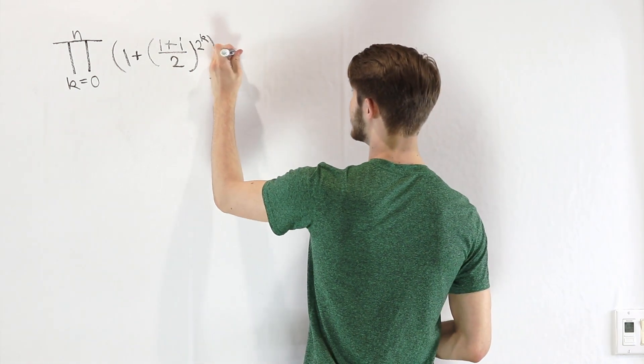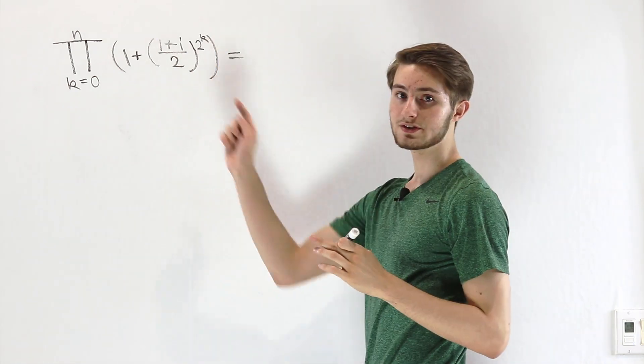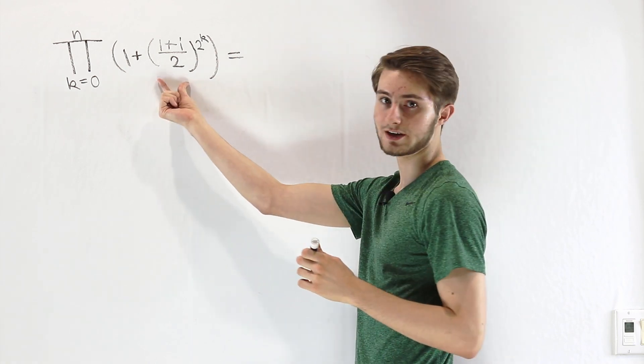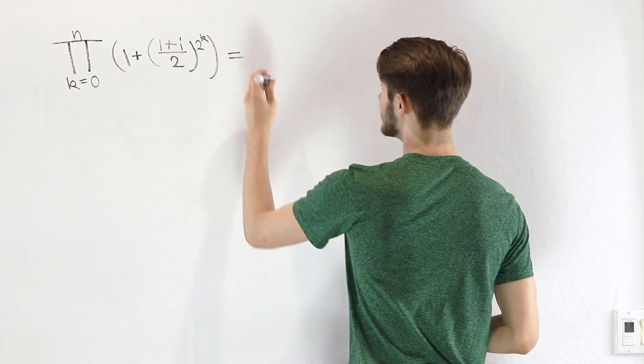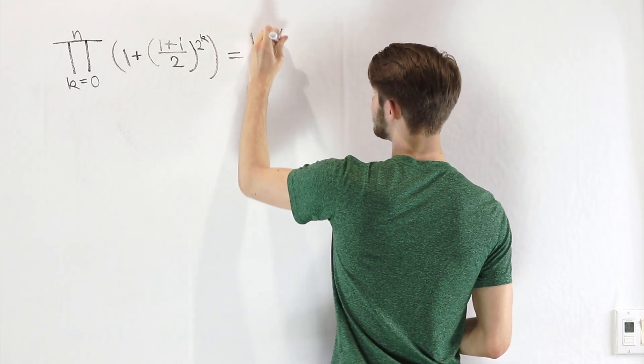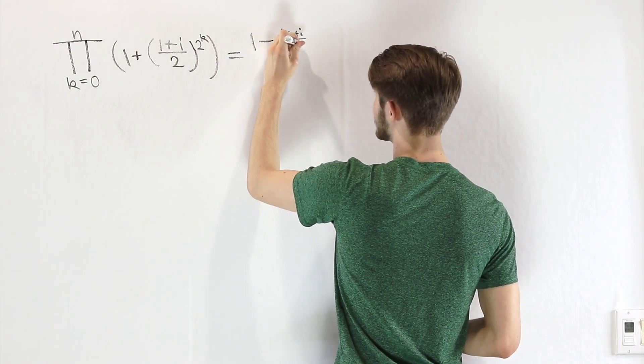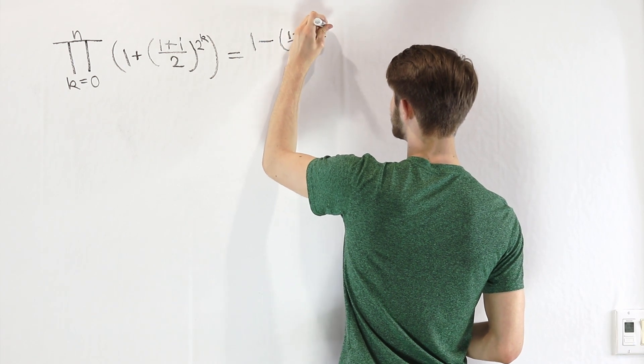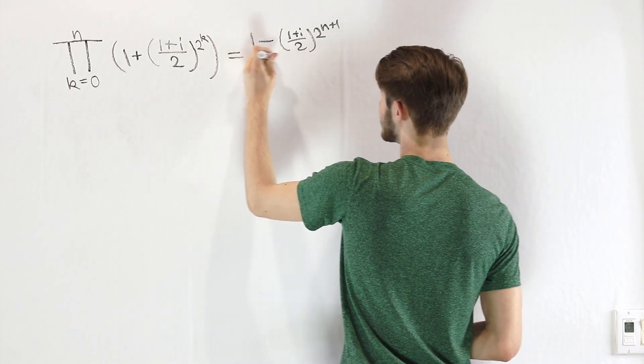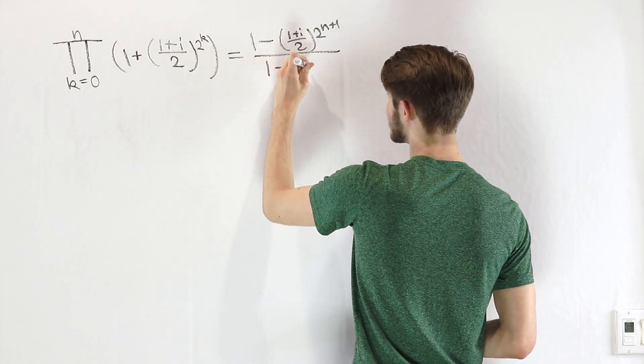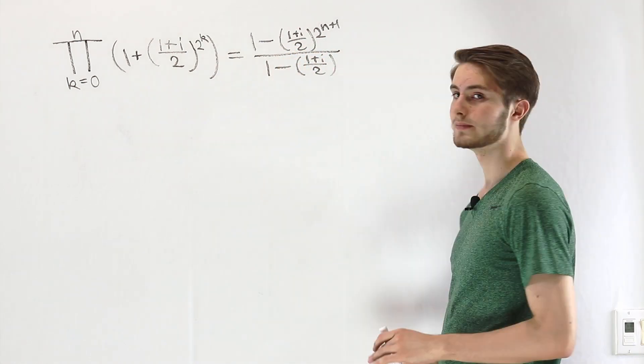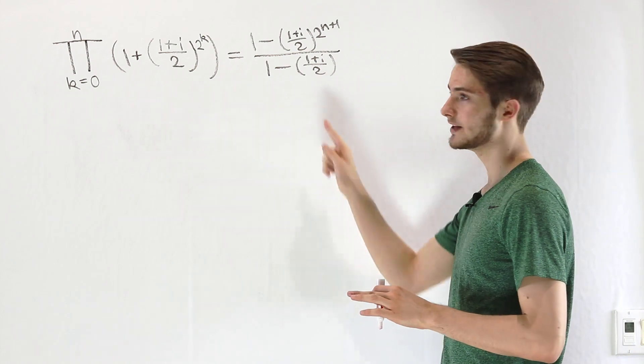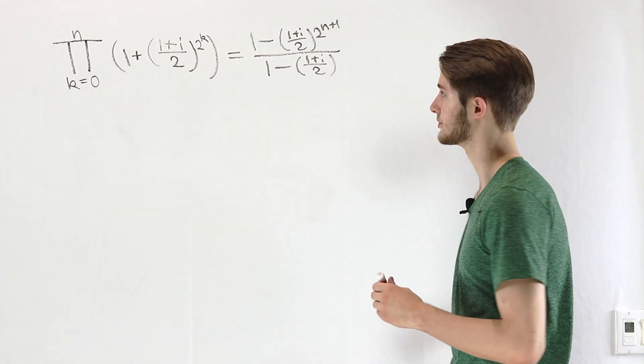There's actually a nice representation of this finite product in terms of the value inside this exponent, (1 + i)/2. We can write this as (1 - ((1 + i)/2)^(2^(n+1)))/(1 - (1 + i)/2). And our job now is just to simplify this so that we get a nice answer as a result.